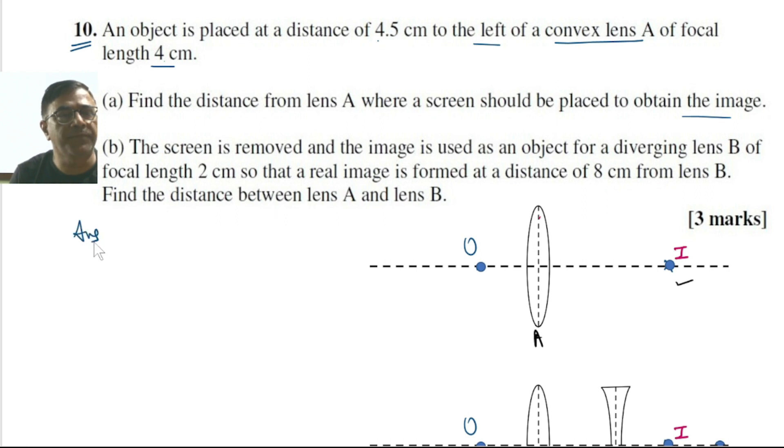For part A, here F equals plus 4.0 centimeters, U equals minus 4.5 centimeters which equals minus 9 by 2 centimeters in fractional form, and we are supposed to find the value of V.